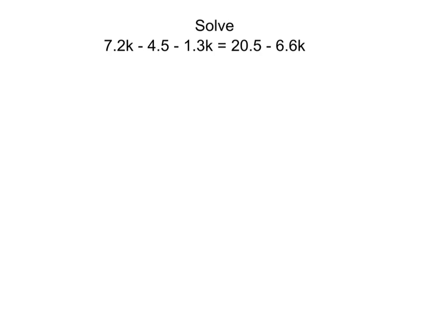So the first thing we'll do is we'll combine our like terms on the left-hand side. From the left-hand side, we have 7.2k minus 1.3k, which will give us 5.9k minus 4.5 equals 20.5 minus 6.6k.